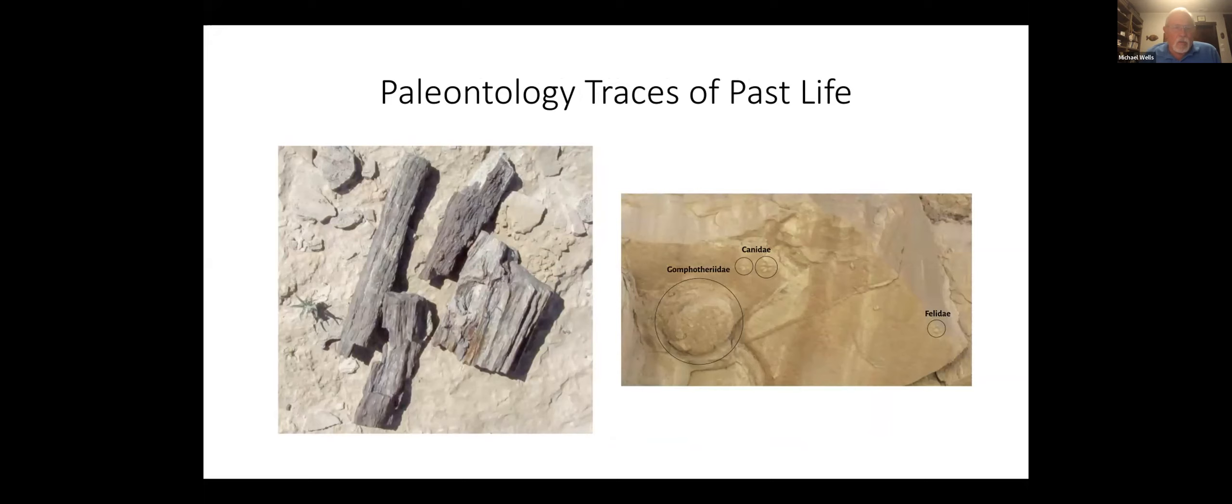Paleontology. Anza-Borrego is actually one of the things it's known for: the amount of fossils that are found from the Miocene and the Pleistocene. Some of them are plants. On the left, those are probably California bay laurel that are fossilized.